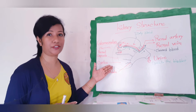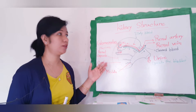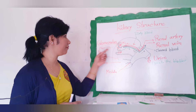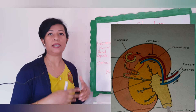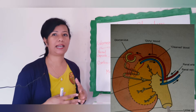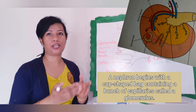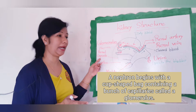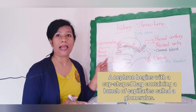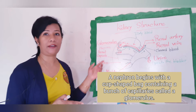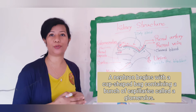So this is a nephron. Each kidney tubule begins in the cortex as a cup-like structure called the renal capsule. This is the renal capsule. The nephron begins with a cup-shaped bag.